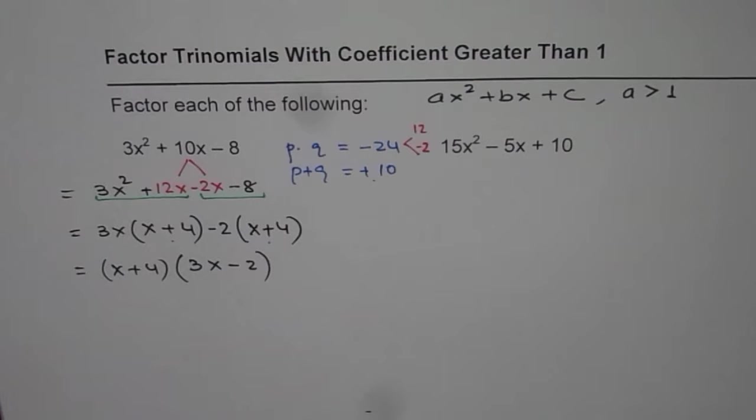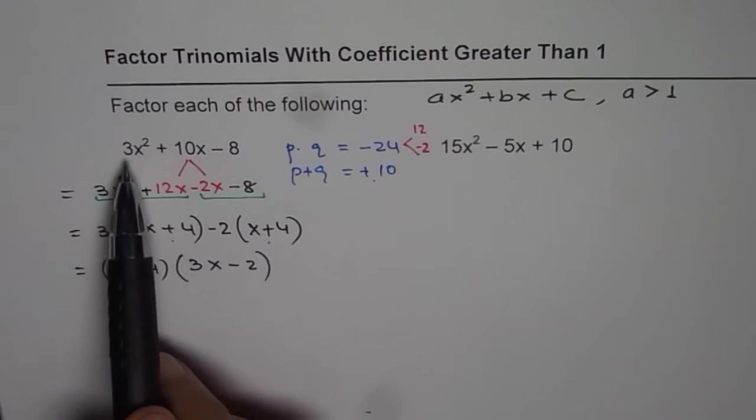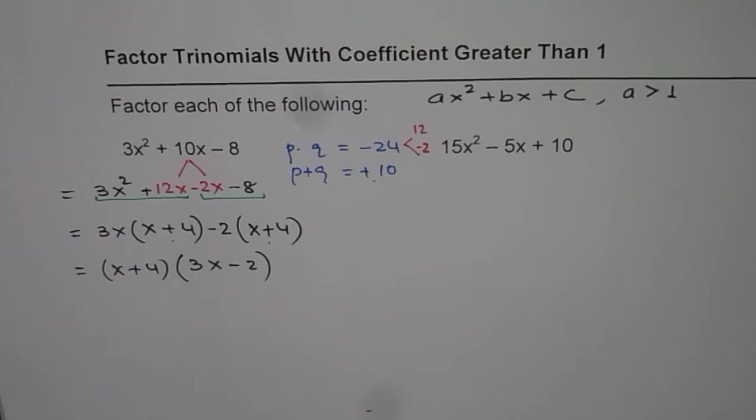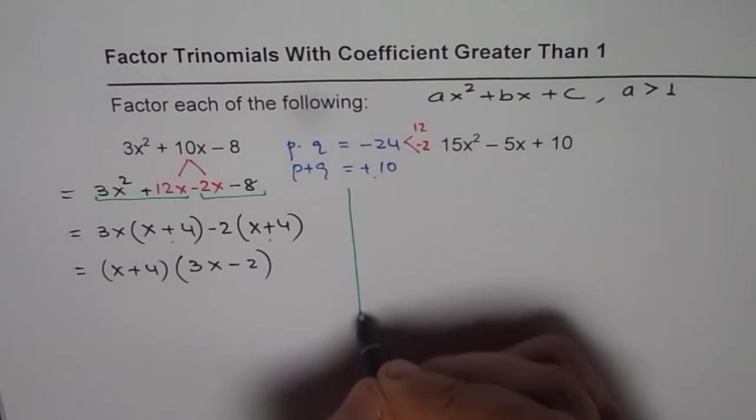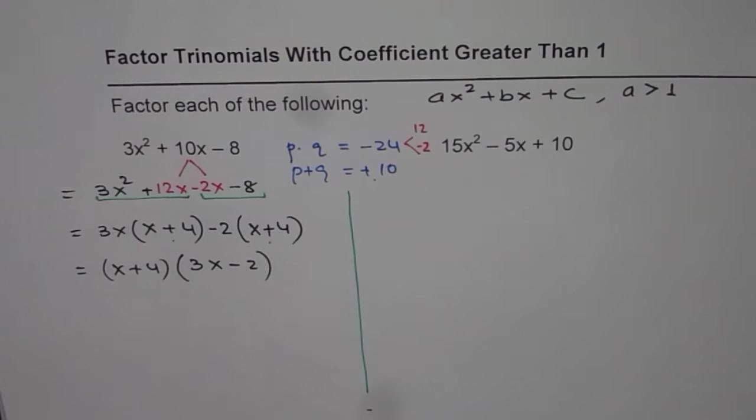So it is done. So that is the factored form of the given trinomial where the leading coefficient is not 1 but it is 3 in this case. Now let us see how to solve the next one.